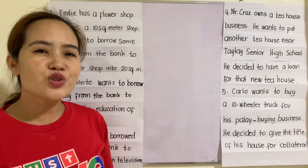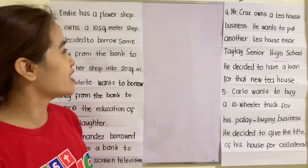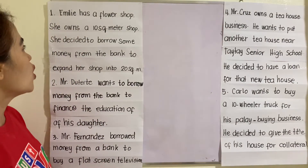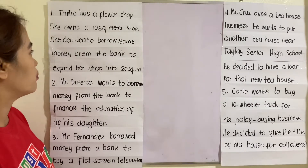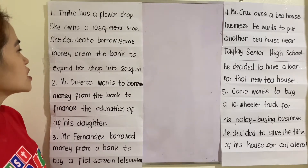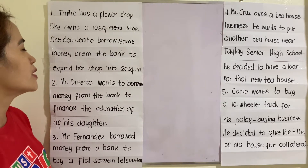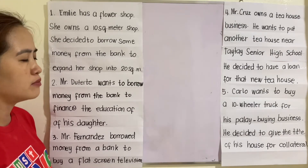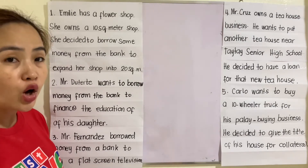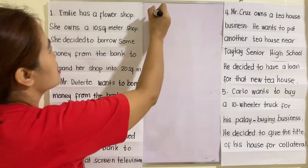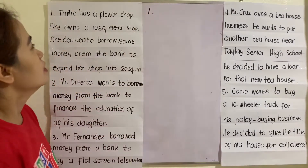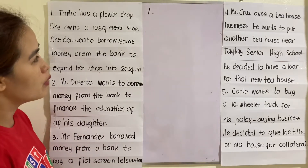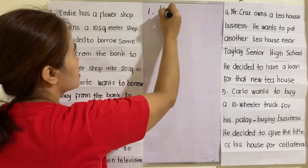Let us now distinguish consumer loan from business loan. Example one: Emily has a flower shop. She owns a 10-square-meter shop and decided to borrow money from the bank to expand her shop to 20 square meters. What kind of loan is this? Since she has a business — a flower shop — this is a business loan.